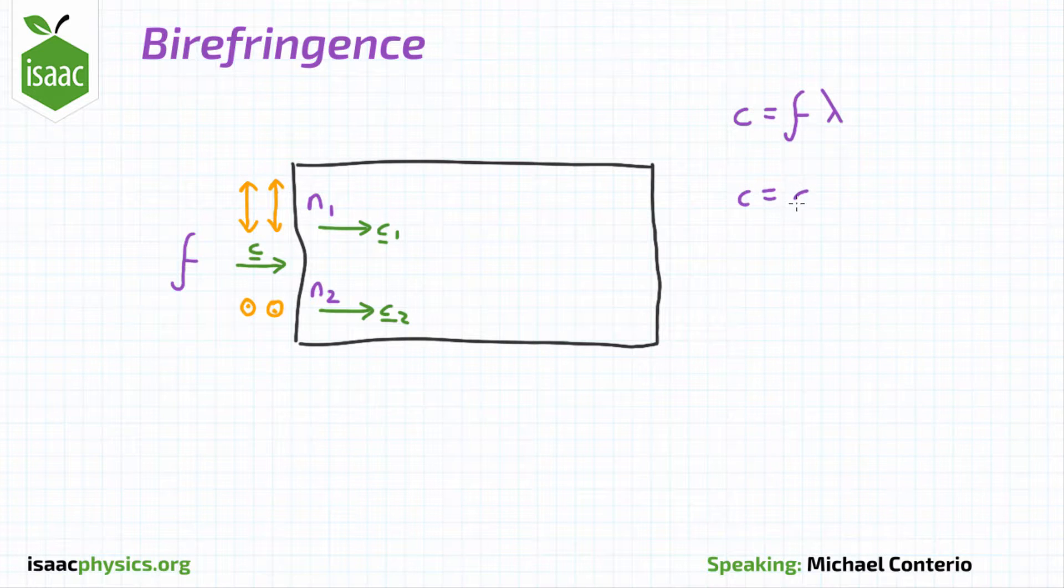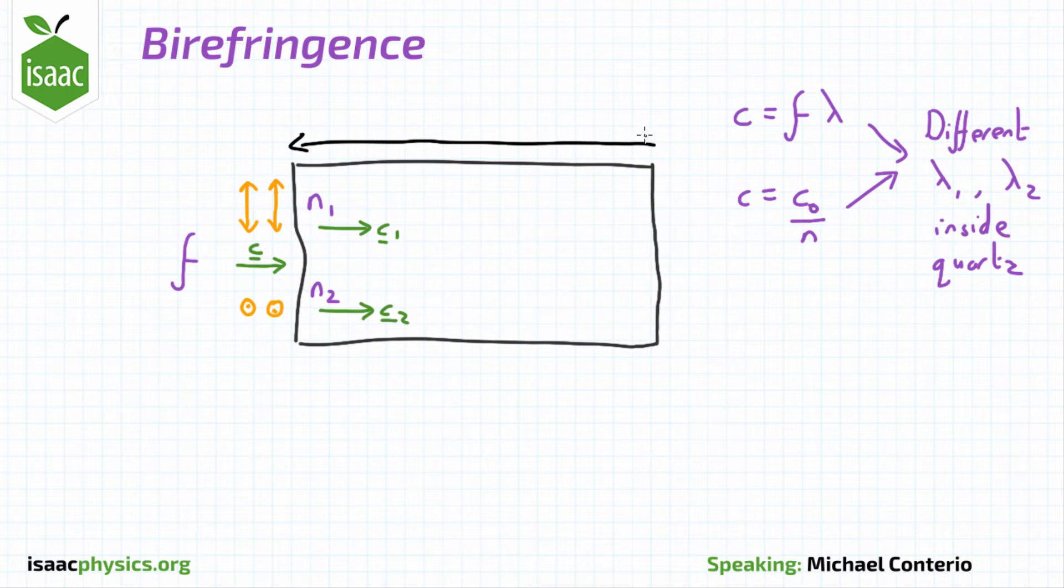The speed C is given by C0, the speed of light in a vacuum, divided by N, the refractive index at that point. By combining these with the two different polarizations inside the quartz, you can obtain different wavelengths for each polarization. Let's call the thickness of the quartz T.